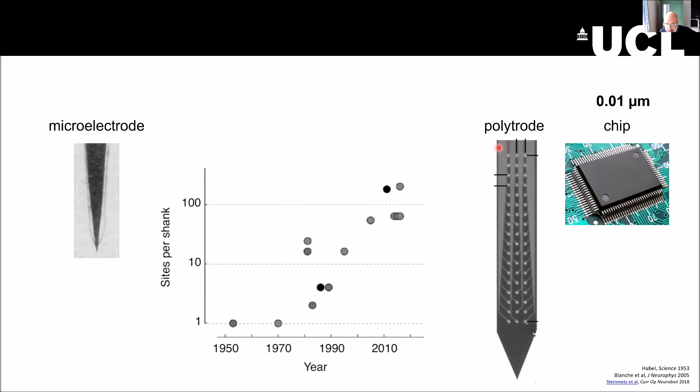One thing that you may want to notice right away is that the microelectrode is the recording site and the cable. When you get to the polytrode, every little dot here is a recording site, and every line is a channel that allows you to record from it. You can see what happens up here. The entire shank is taken up by wires, by the channels.